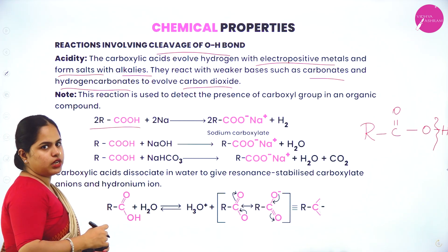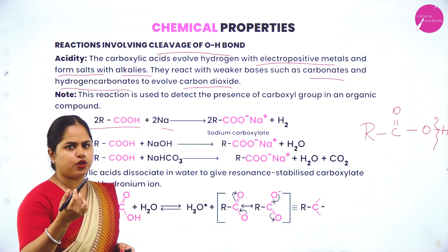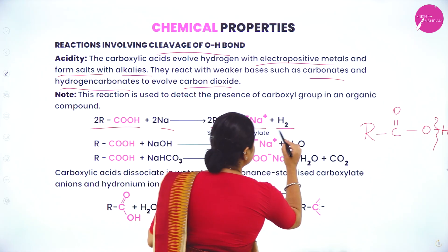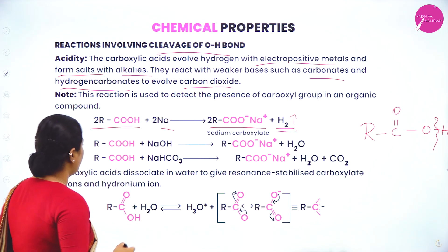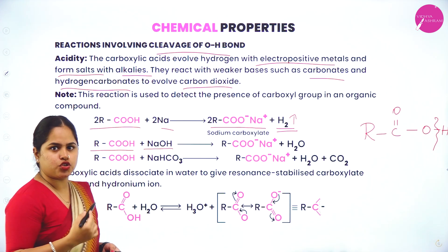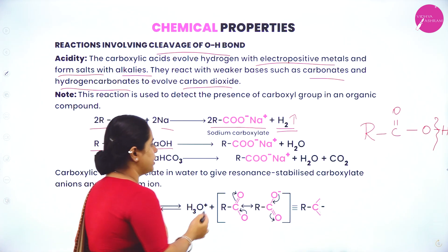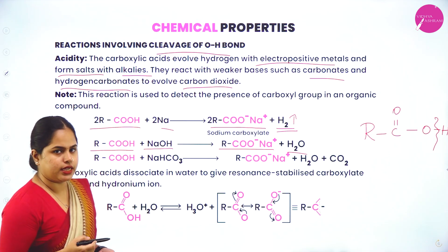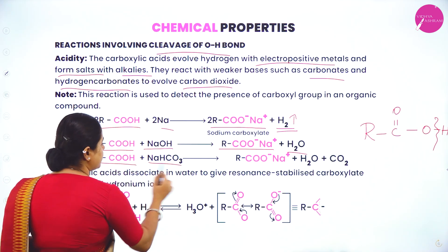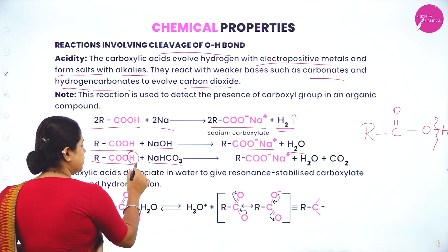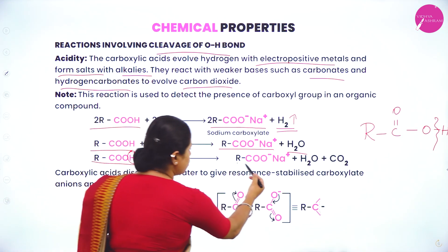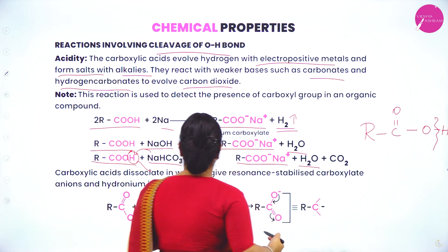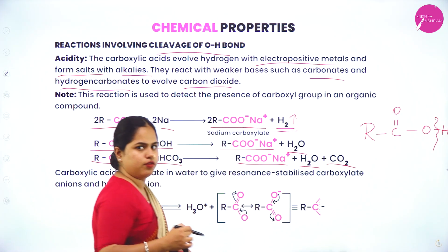Two moles of carboxylic acid react with sodium (a highly electropositive metal) to give the sodium salt of carboxylic acid and hydrogen gas. Carboxylic acid reacting with NaOH gives the sodium salt and water. When carboxylic acid reacts with sodium bicarbonate, the hydrogen is replaced by sodium giving the sodium salt, and CO₂ is liberated along with water.